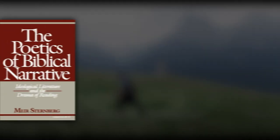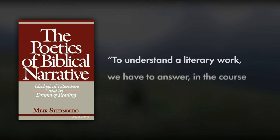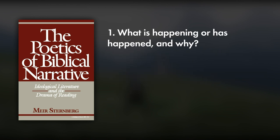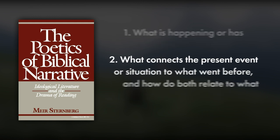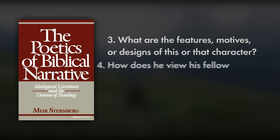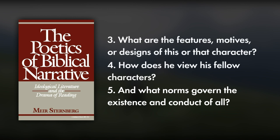In the book The Poetics of Biblical Narrative, Mayer Sternberg has a chapter on gaps in stories. He says that to understand a literary work, we have to answer in the course of reading a series of such questions as: what is happening or has happened and why? What connects the present event or situation to what went before? And how do both relate to what will probably come after? What are the features, motives, or designs of this or that character? How does he view his fellow characters? And what norms govern the existence and conduct of all? And it is in answering these questions — these gaps — that we will make sense of the work.